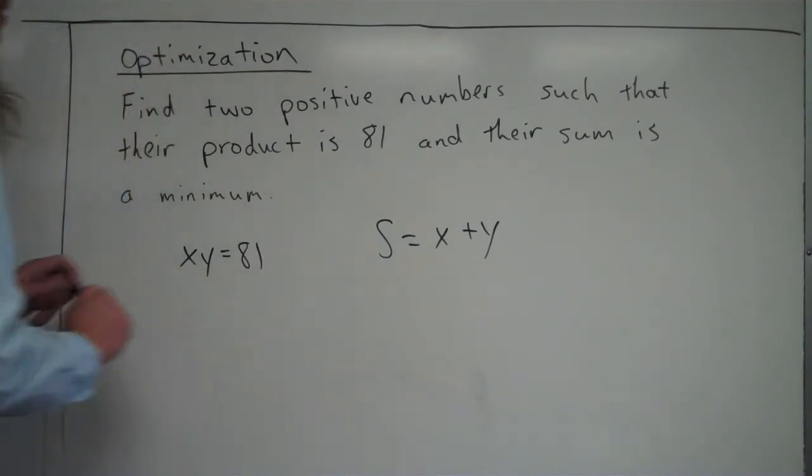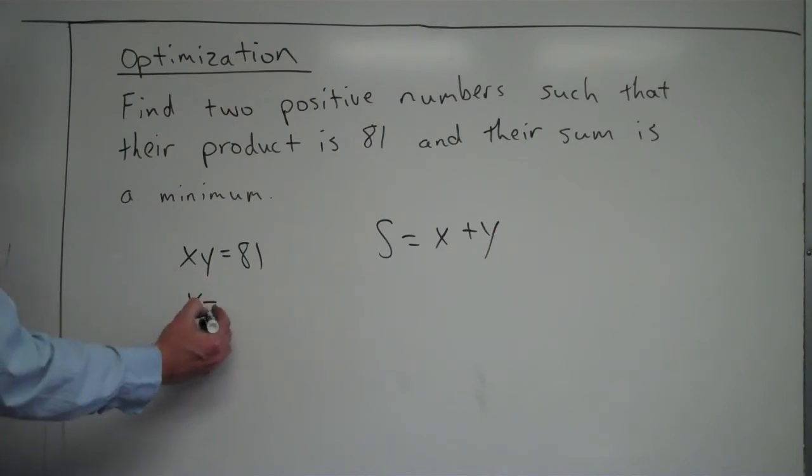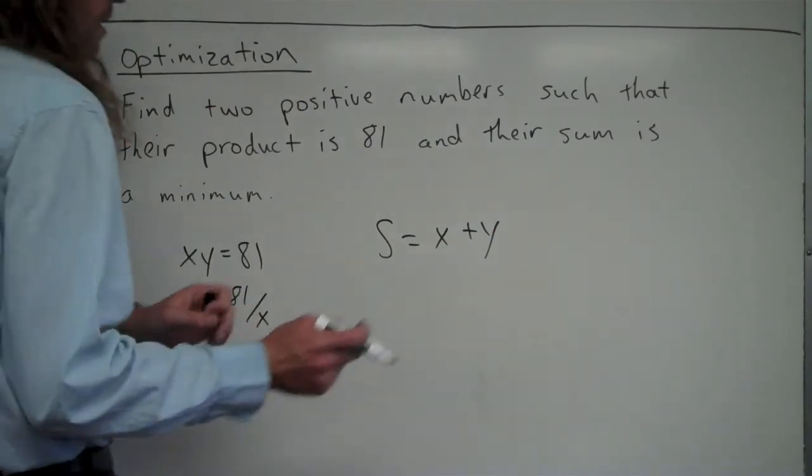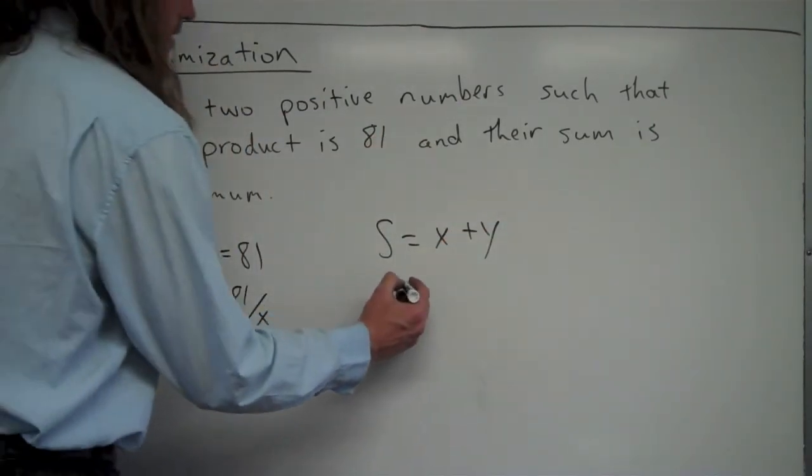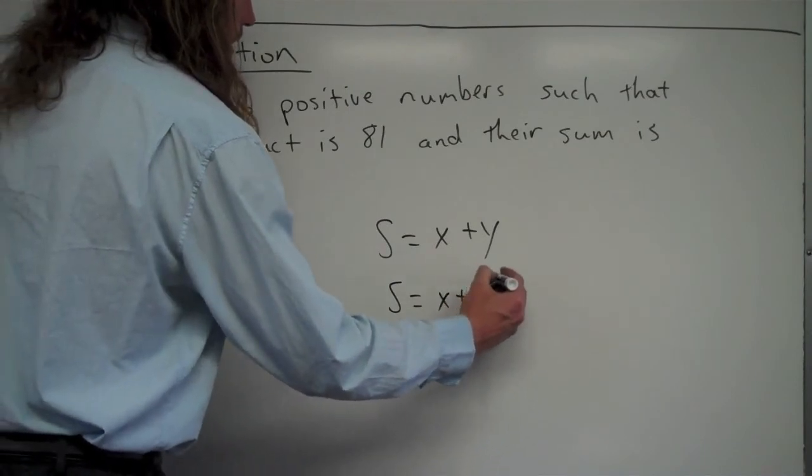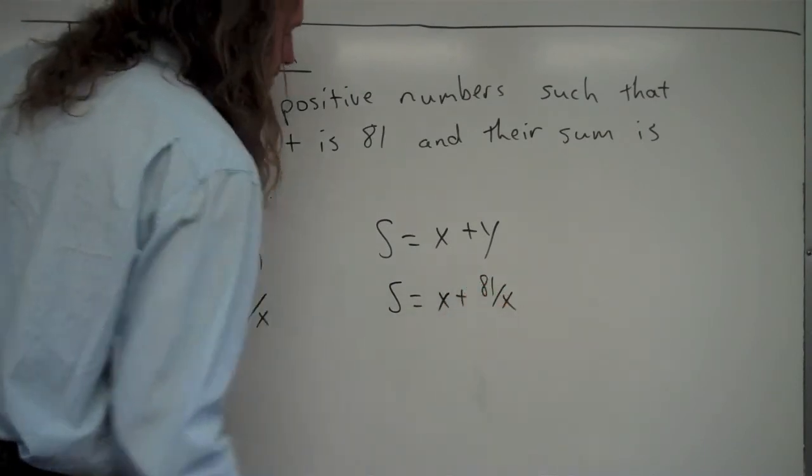So that's where the constraint equation comes in handy. Now, in this case, eliminating x or y is equally as easy. So let's say I divided both sides by x and got 81 over x. So what I'm going to do is I'm going to take 81 over x, and I'm going to plug it in where I see y over here, since y is equal to 81 over x. So I get S is equal to x plus 81 over x.